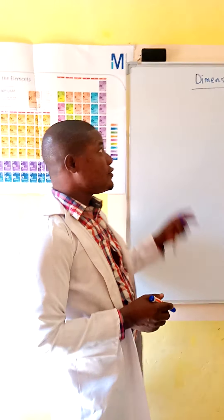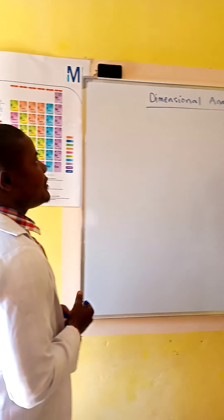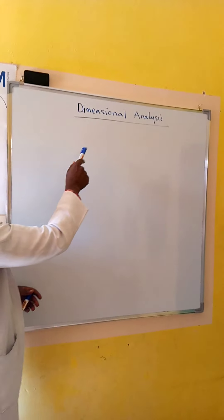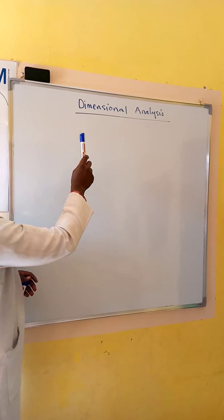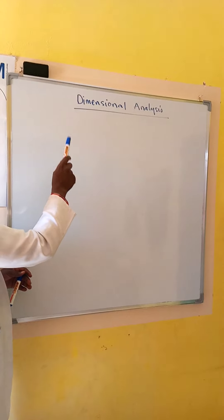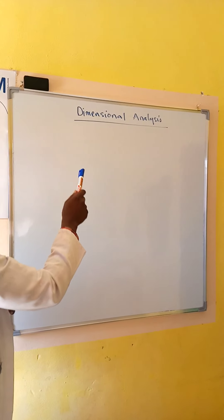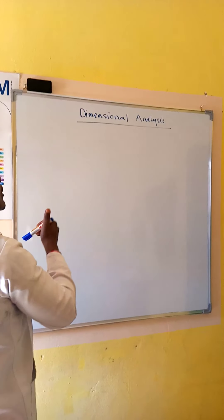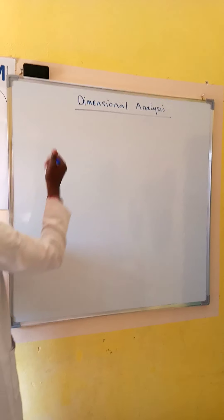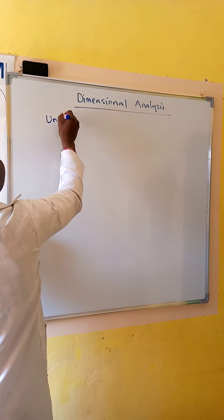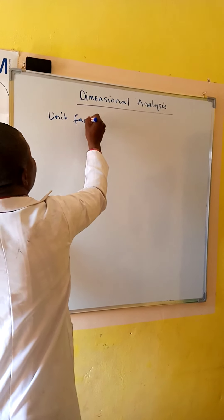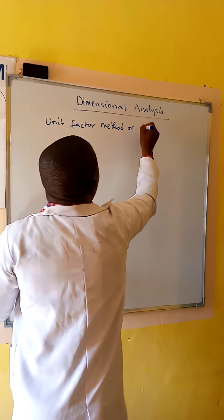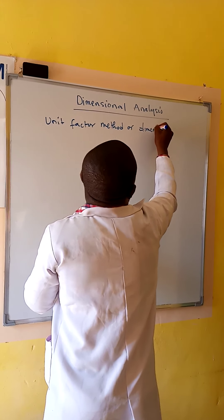In this tutorial, we'll look at dimensional analysis. It is often necessary to convert the results of a given system of units to another. The best way to do this is to use a method called the unit factor method, or dimensional analysis.